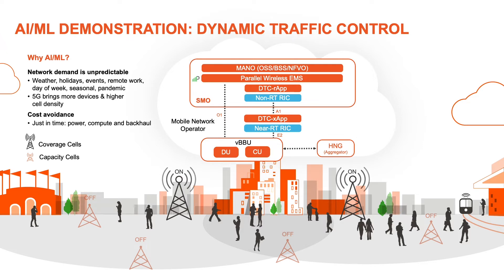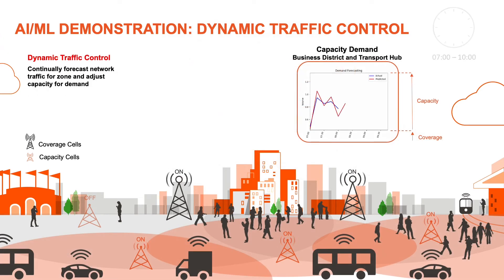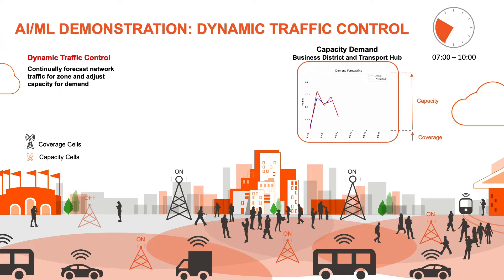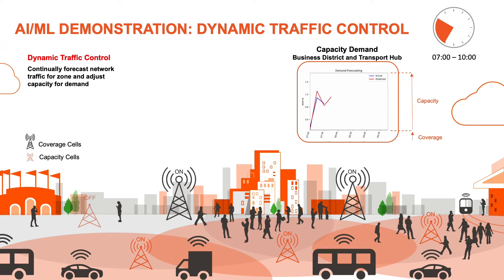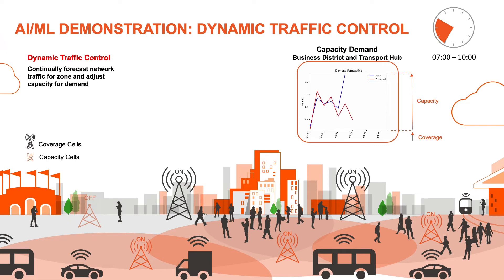In the future for dynamic traffic management, machine learning models in the RAN architecture will continually forecast network traffic for a zone based on predictions. Forecasting accuracy will enable better operational efficiencies and reduction in costs. Here, in the morning between the hours of 7 and 10 a.m., we see lots of mobile users arriving at the commuter rail station, driving into the city center, and walking into offices in the business center. The graph shows the ML modeling of the transport hub and business district areas — the red line shows ML predicted capacity running ahead in time, while the blue line shows the actual capacity needed. This example shows a very accurate model able to efficiently manage when capacity cells need to be brought online.